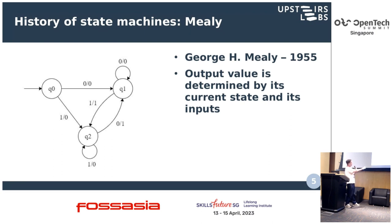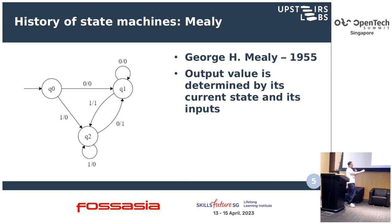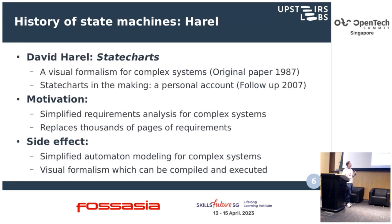Then the Mealy machine, created around the same time by George Mealy, represents the same state machine, however the difference is that the output is determined by the transition from one state to another. So they're basically the same thing — you have states, a finite number of states, transitions, inputs, and outputs — just that in the Mealy machine the outputs are determined by the transition.